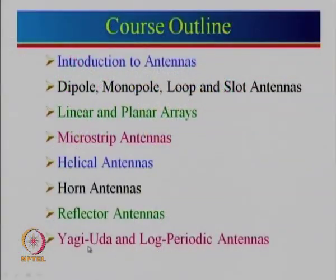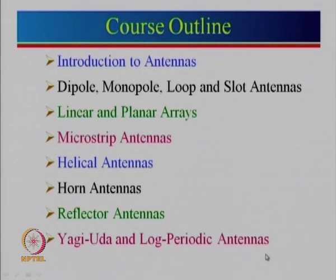Then we will look into reflector antennas — a passive device which reflects a given antenna. There are different types: planar reflector, corner reflector, or parabolic reflector. After that we will talk about the Yagi-Uda antenna, named after scientists from Japan who invented it, and log periodic antennas, where all dimensions vary in a logarithmic manner.